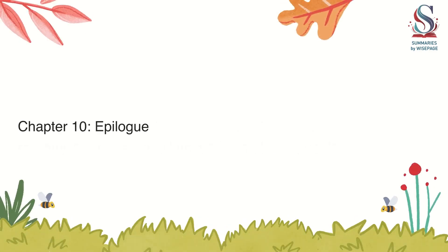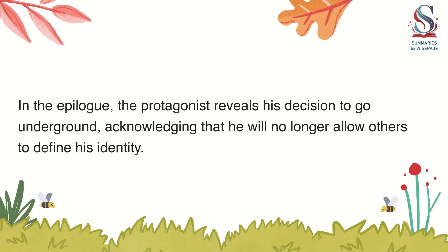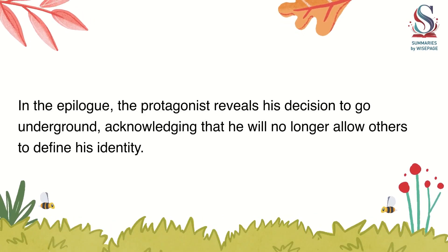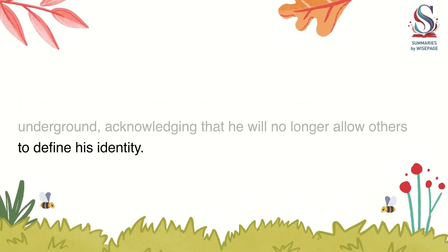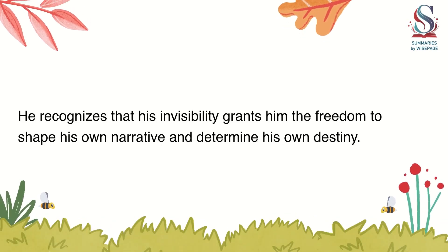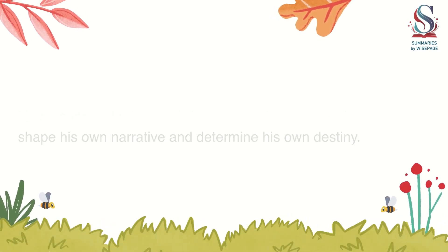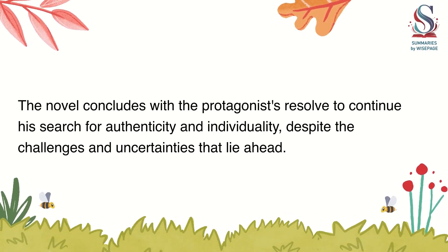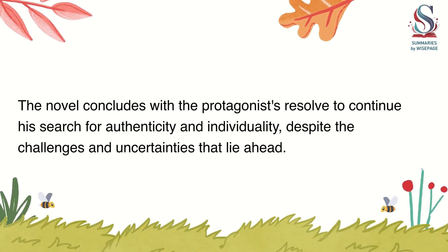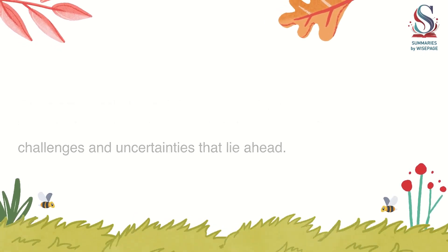Chapter 10: Epilogue. In the epilogue, the protagonist reveals his decision to go underground, acknowledging that he will no longer allow others to define his identity. He recognizes that his invisibility grants him the freedom to shape his own narrative and determine his own destiny. The novel concludes with the protagonist's resolve to continue his search for authenticity and individuality, despite the challenges and uncertainties that lie ahead.